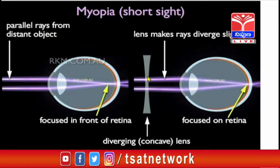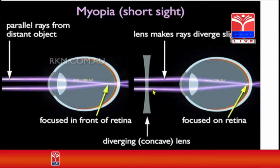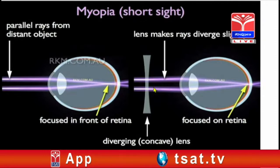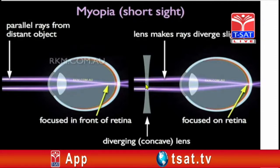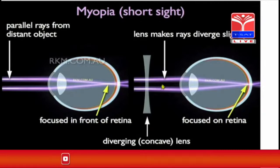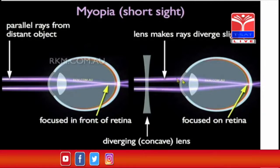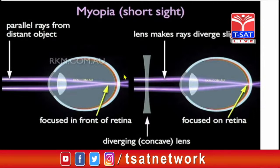To correct the myopia defect, we have to use a biconcave lens. The rays coming from the object through our eye lenses, with this biconcave lens, form the image on the retina.